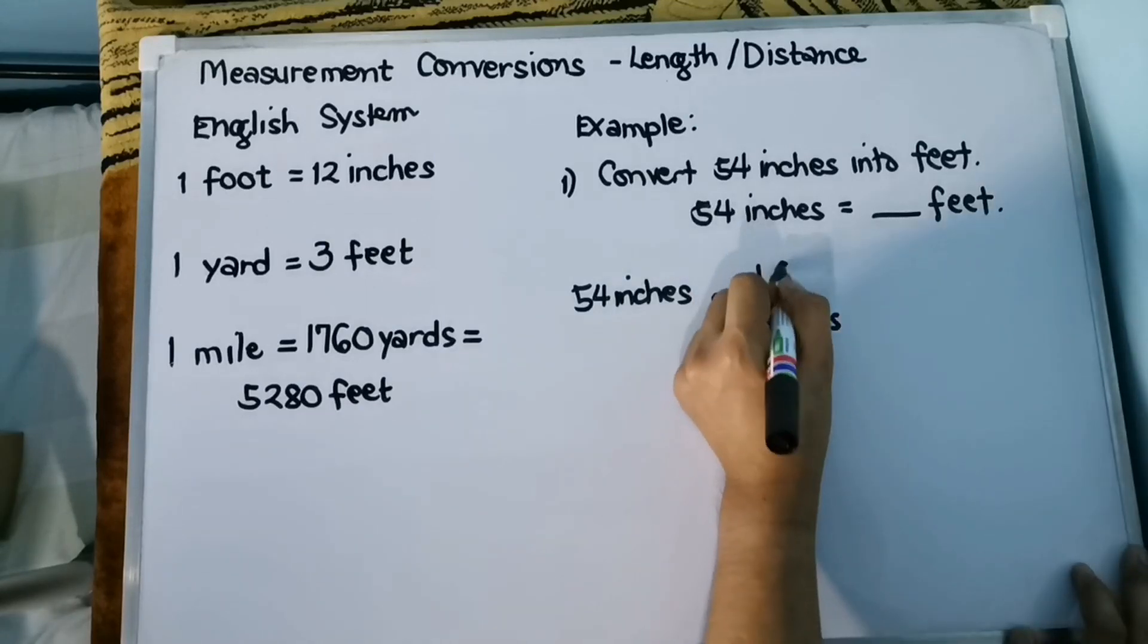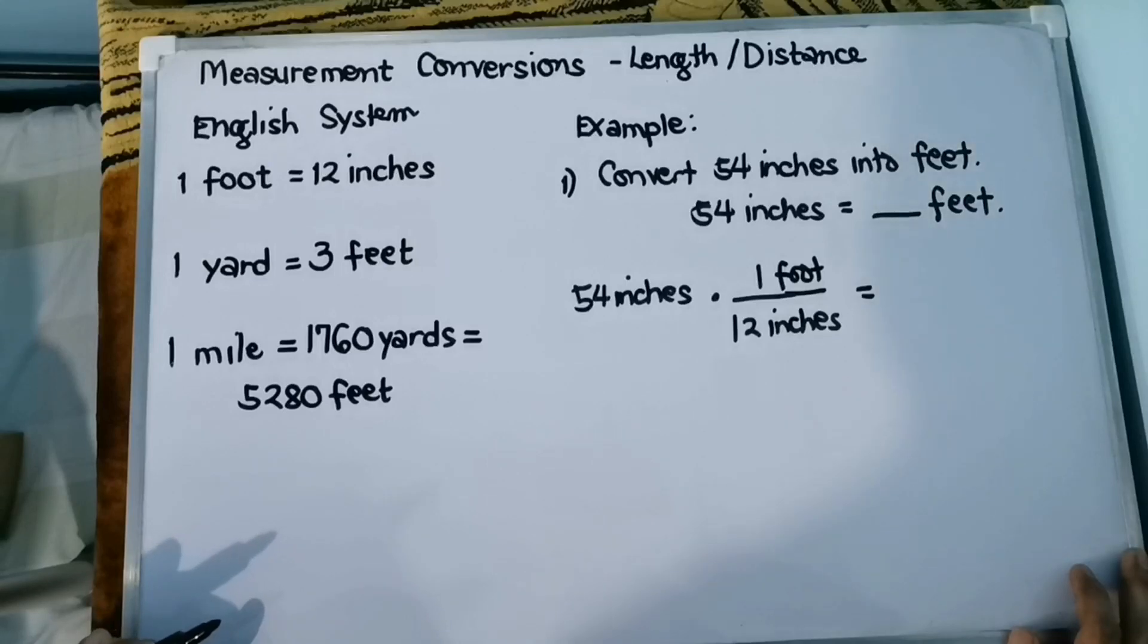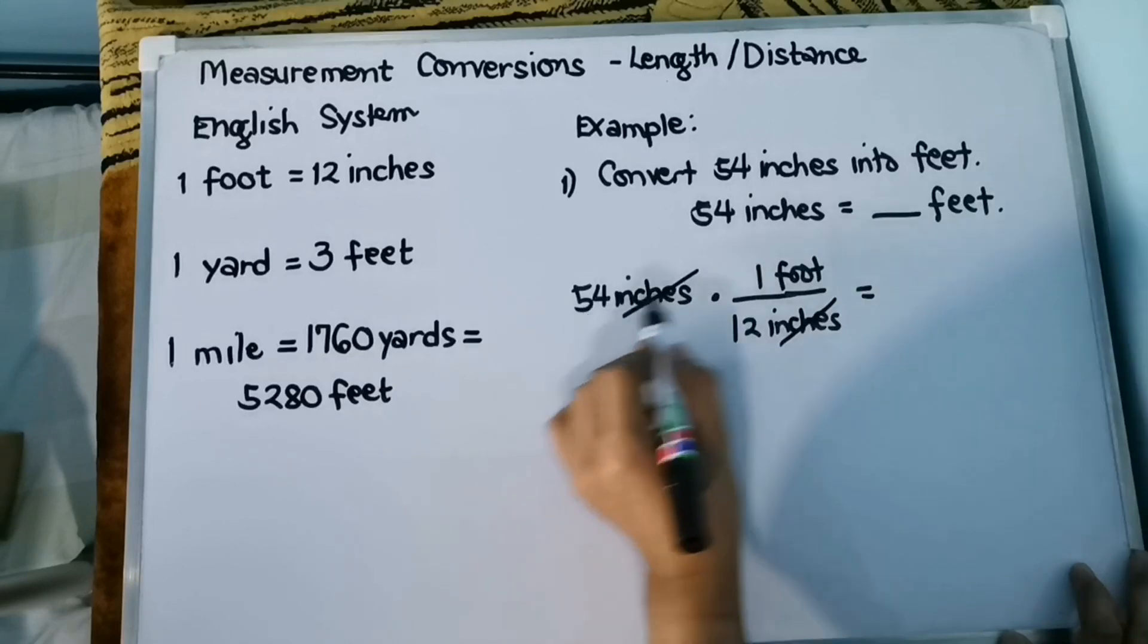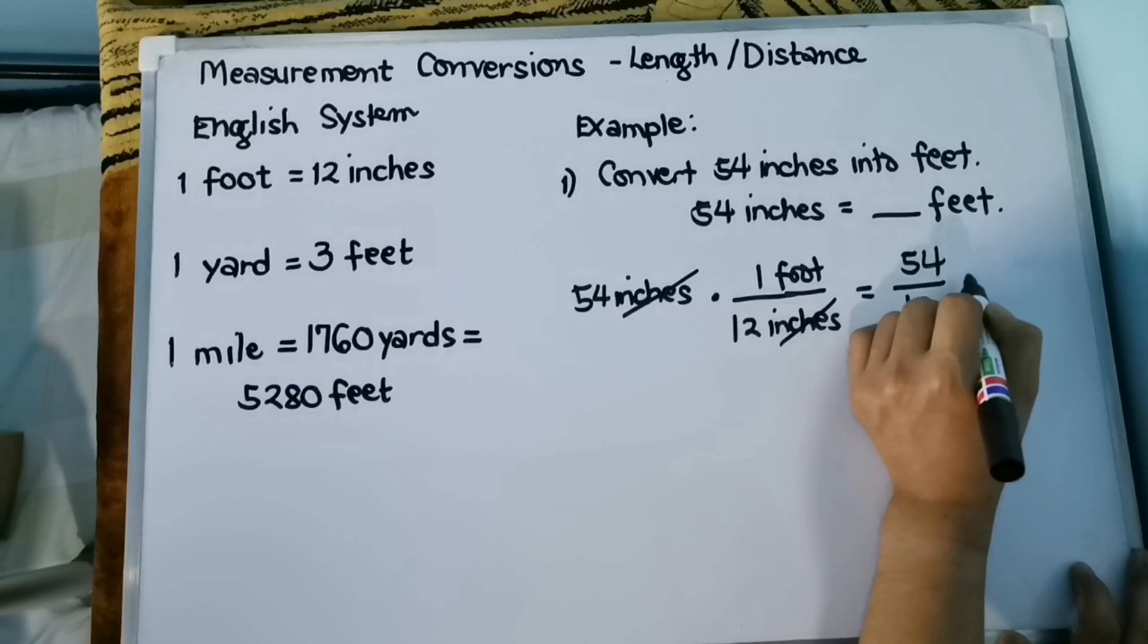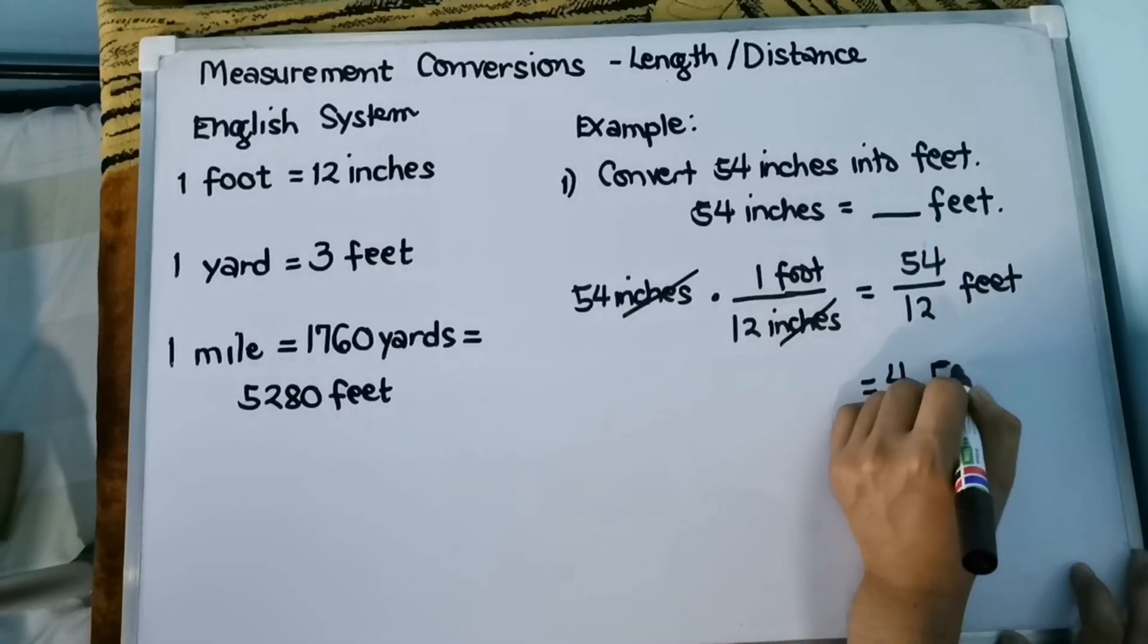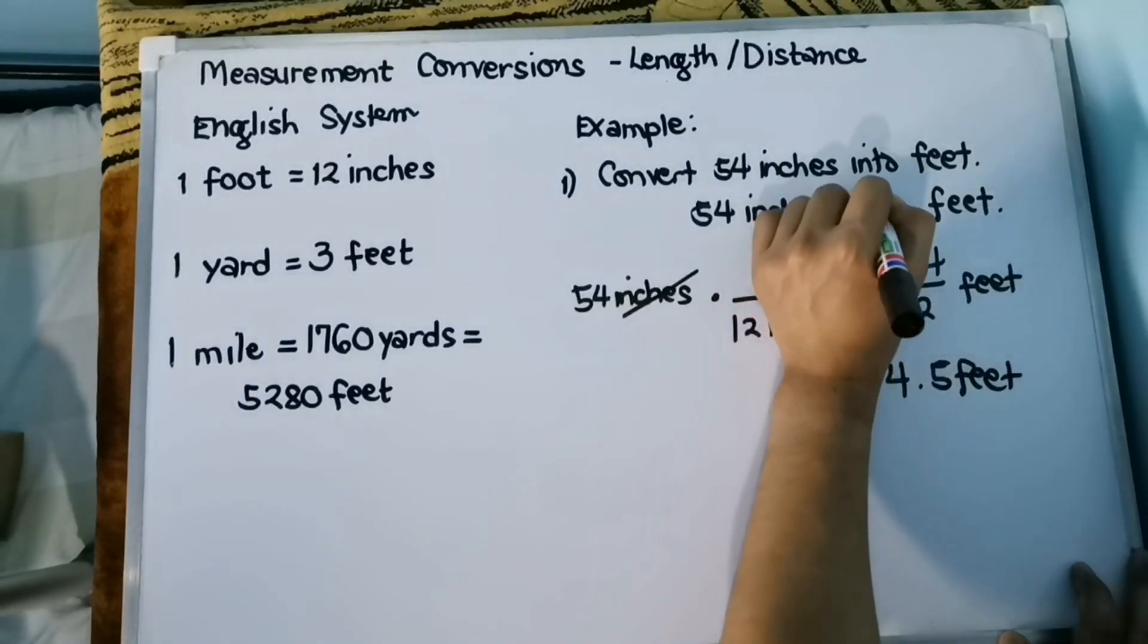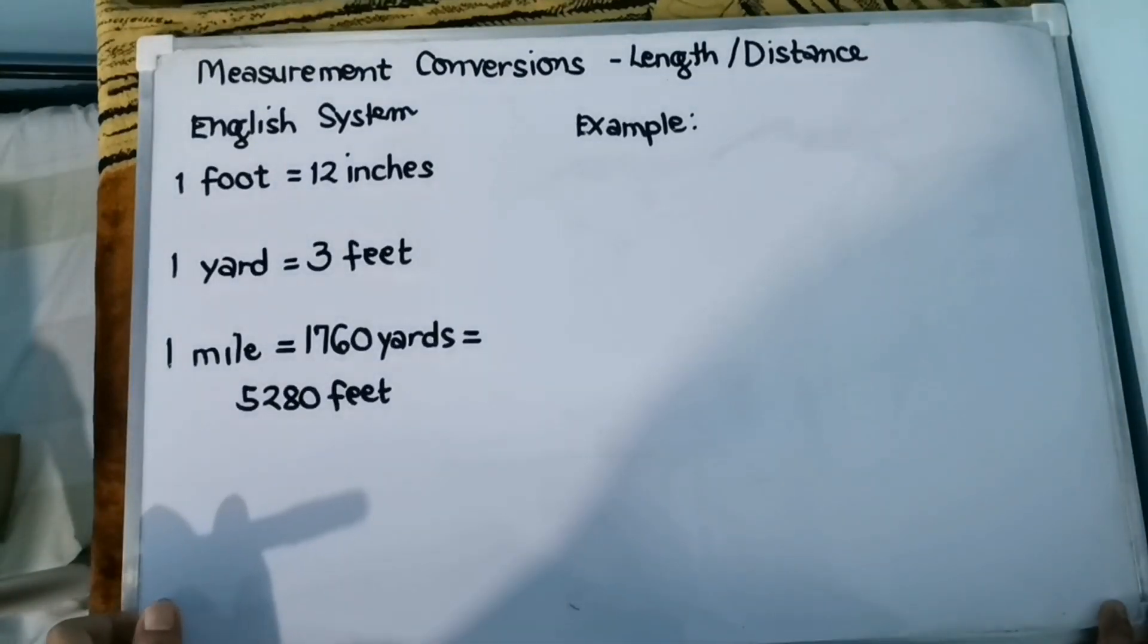And then we need to simplify, so we can cancel inches. And then 54 times 1 is 54 over 12 feet. And then divide, that is 54 divided by 12, we have 4.5 feet. So 54 inches is equivalent to 4.5 feet. Let's have another example.